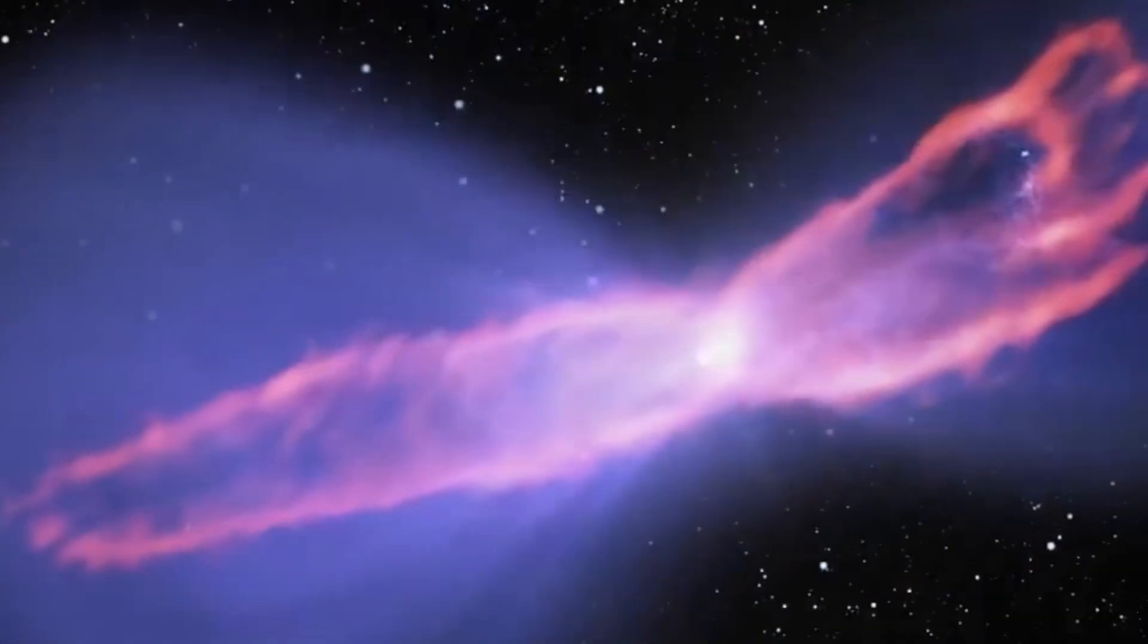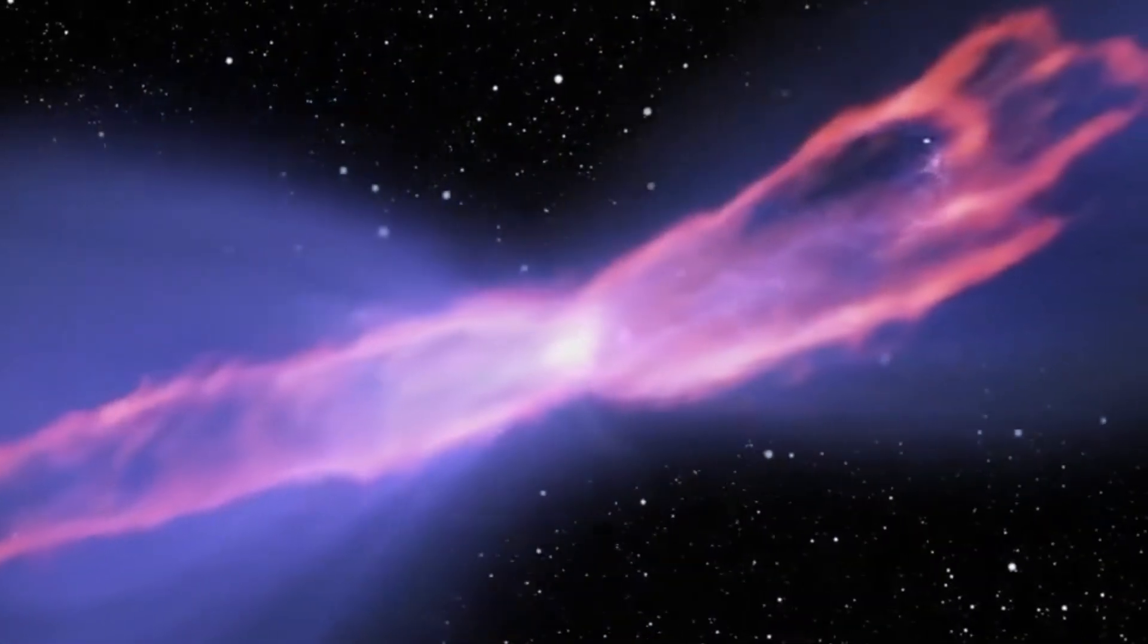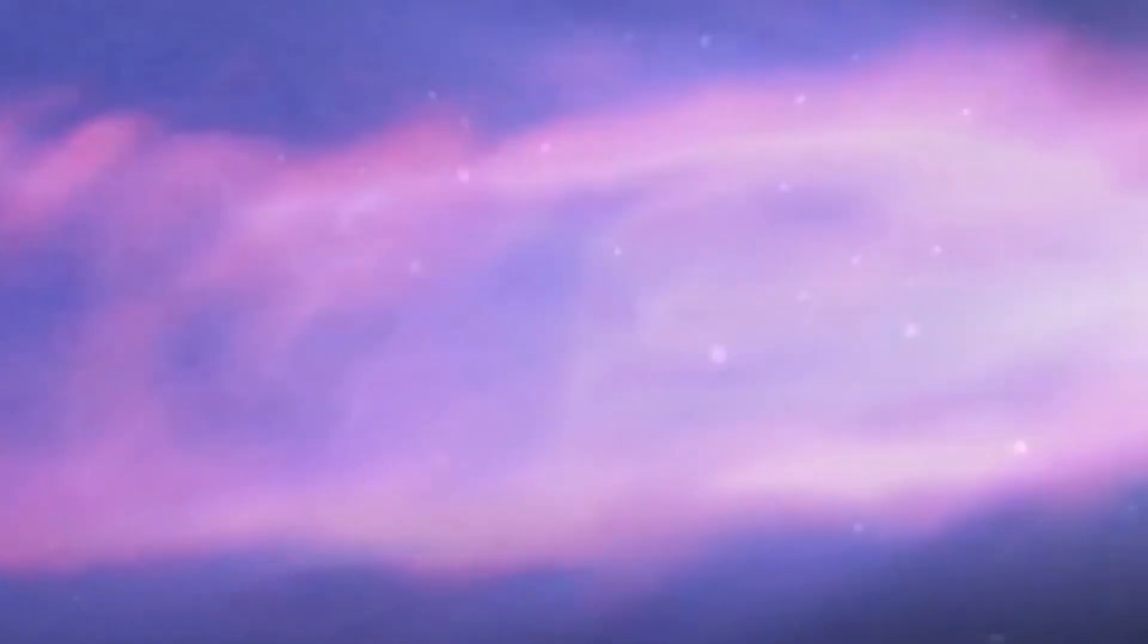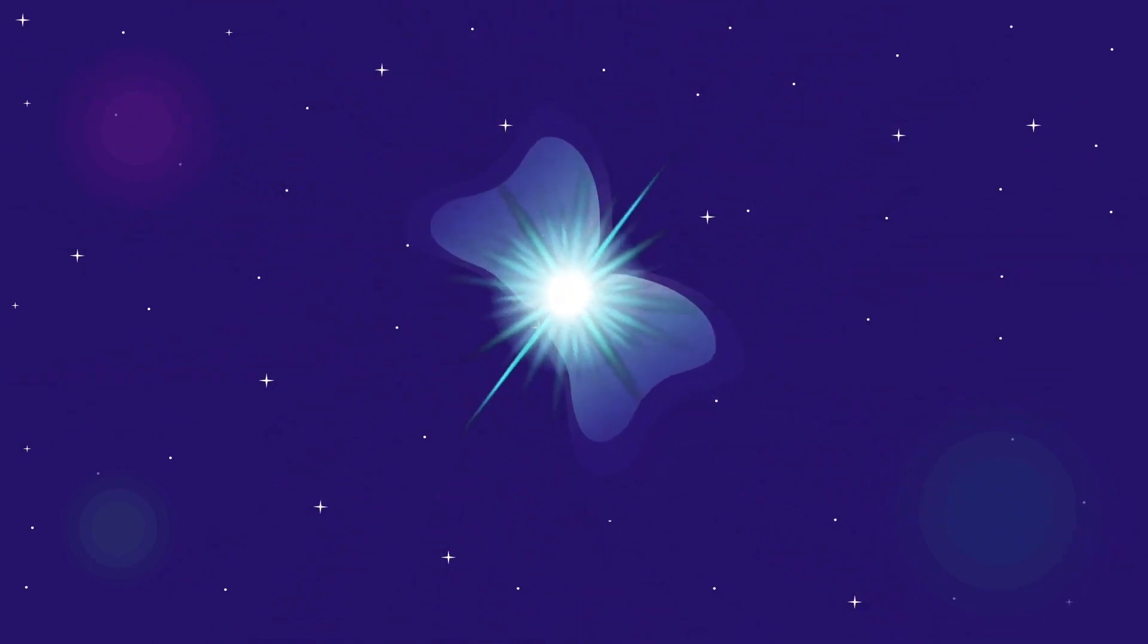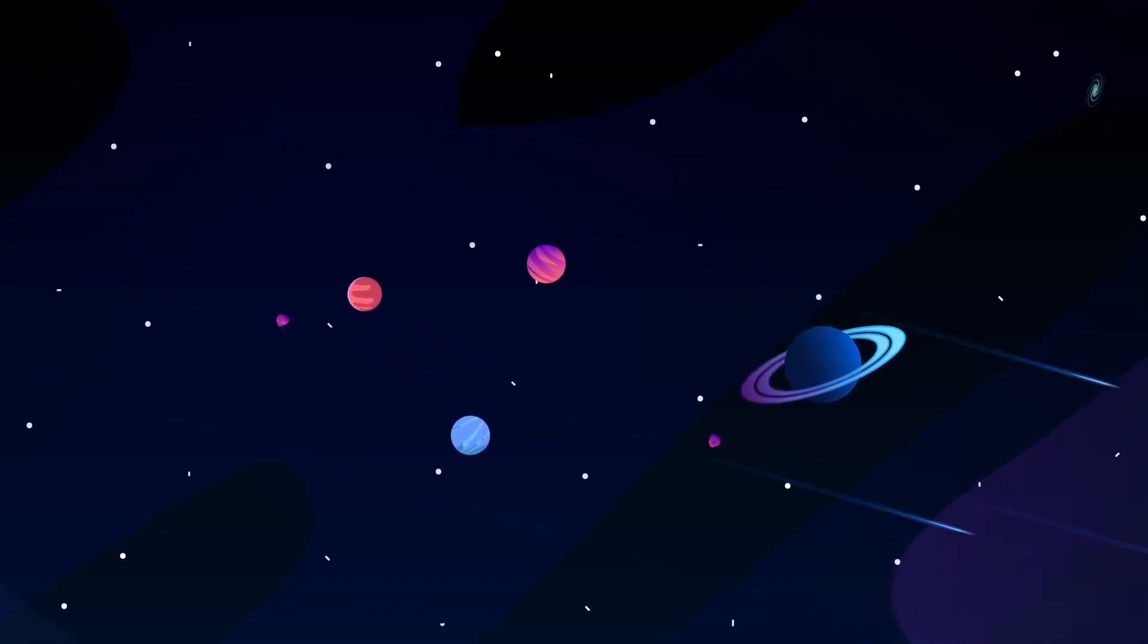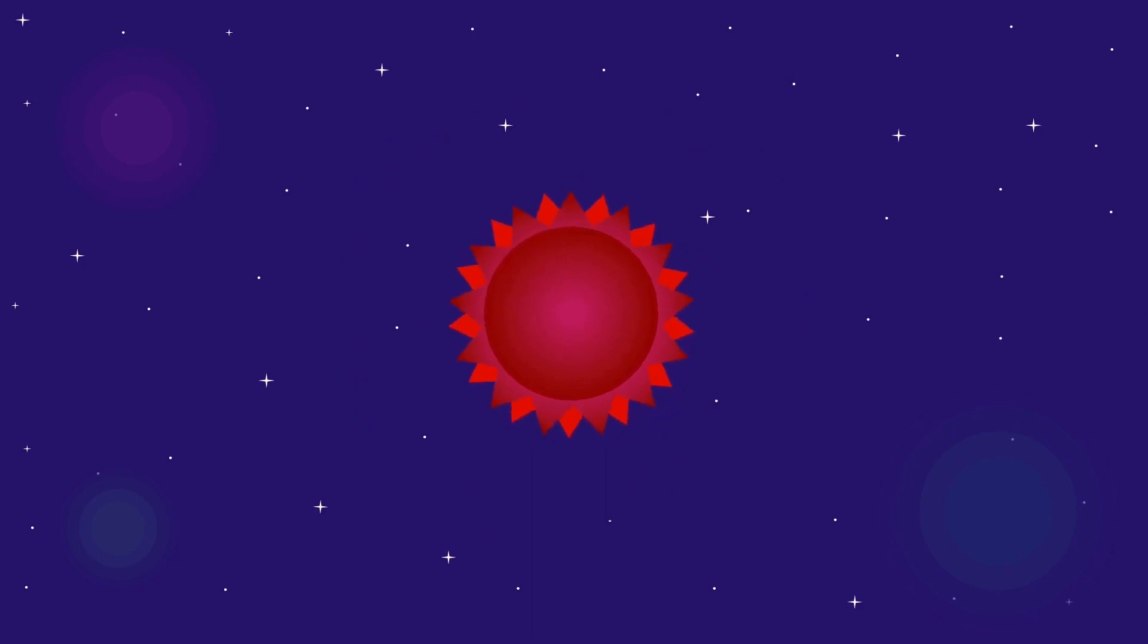The Boomerang Nebula also has a distinctive shape that resembles a boomerang or a bow tie. This shape is caused by a powerful outflow of gas from a dying star at the center of the nebula. The gas expands rapidly and cools down as it moves away from the star, creating a thin shell of icy dust around the nebula. The Boomerang Nebula is a mysterious and intriguing phenomenon that challenges our understanding of the cosmos.